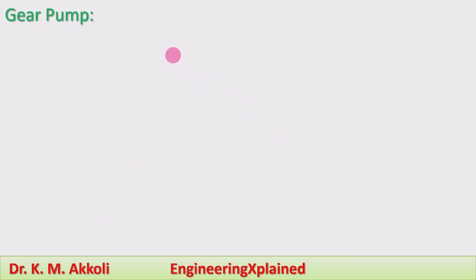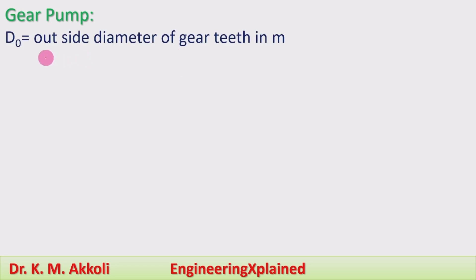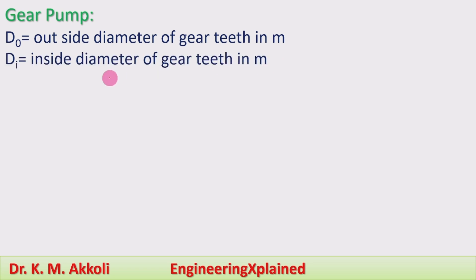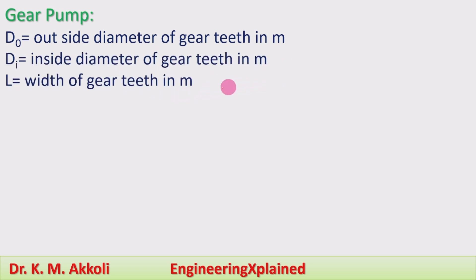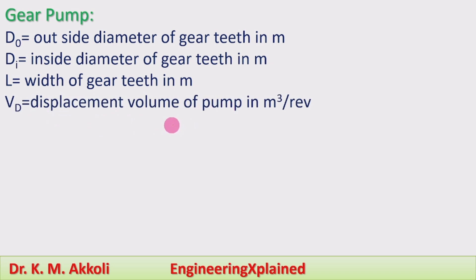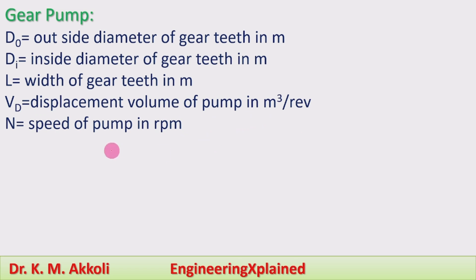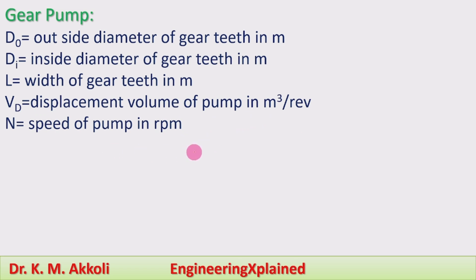First we will move to gear pumps. For gear pumps, D0 is the outside diameter of gear teeth in meters, Di is the inside diameter of the gear teeth in meters, L is the length of the gear teeth in meters, Vd is the displacement volume of the pump in meter cube per revolution, N is the speed of the pump in rpm, and Qt is the theoretical pump flow rate in meter cube.